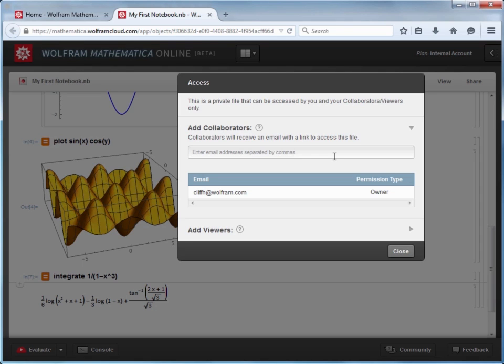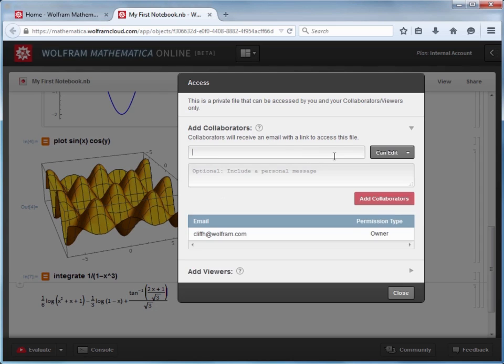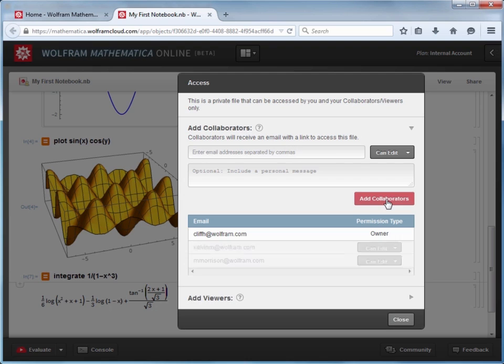Adding a collaborator or viewer is a very simple process. I just select the appropriate option and enter their email address. For example, if I wanted to share this notebook with multiple collaborators, I can enter a list of email addresses here, separated by commas. When you add collaborators to a file, the collaborators get an email to let them know that they now have access to your file. And you can also include a personal message in that email notification if you wish.